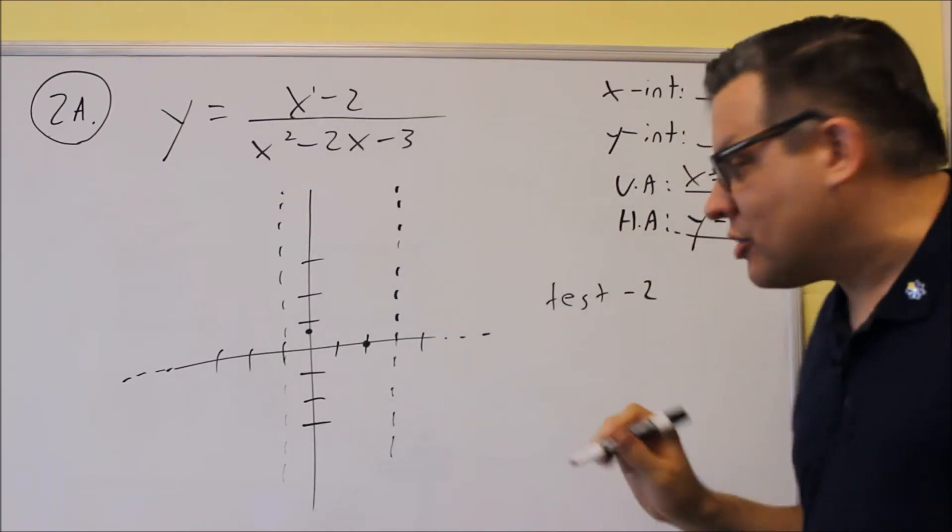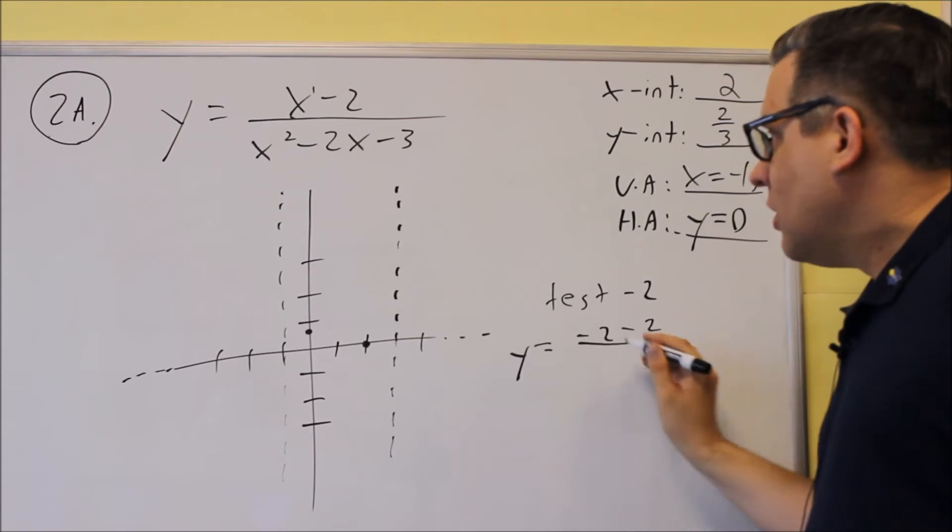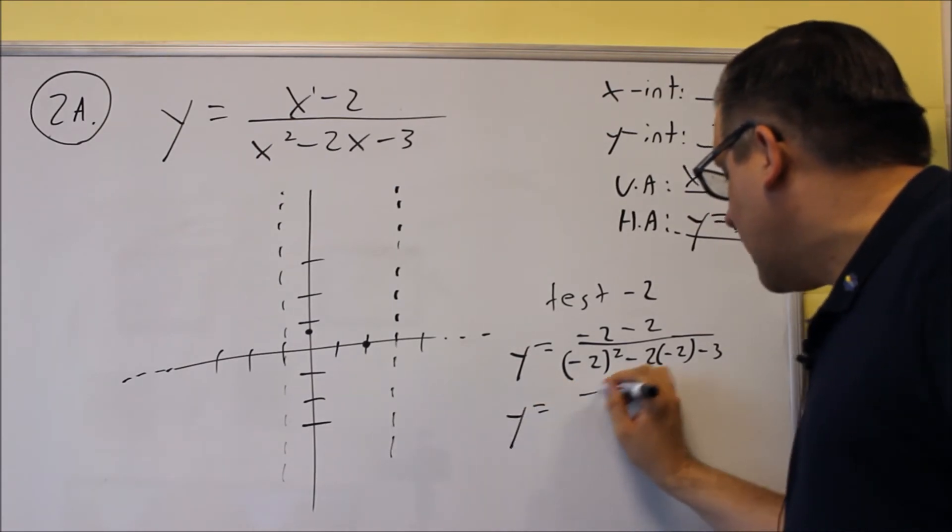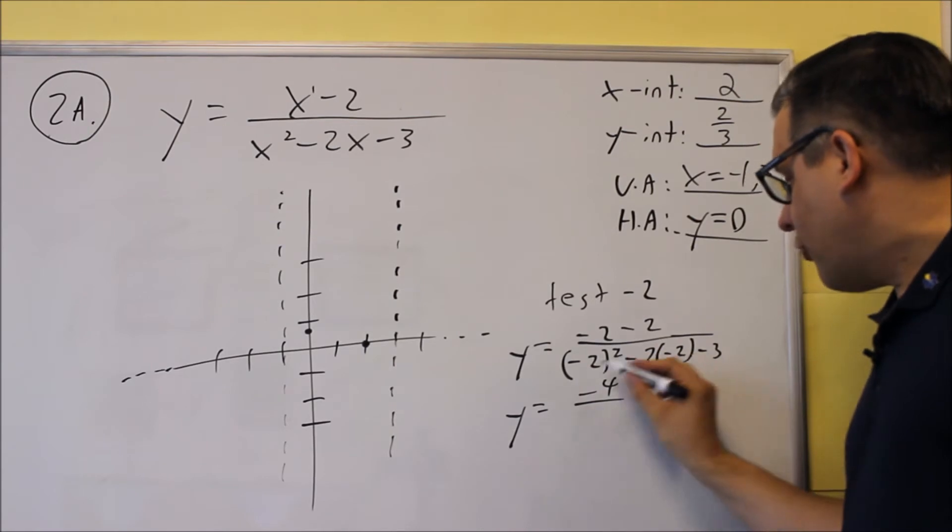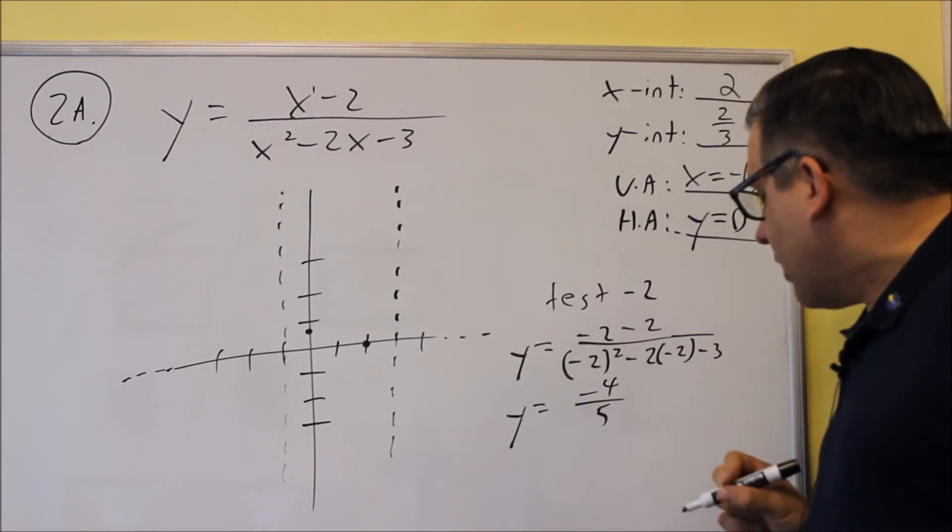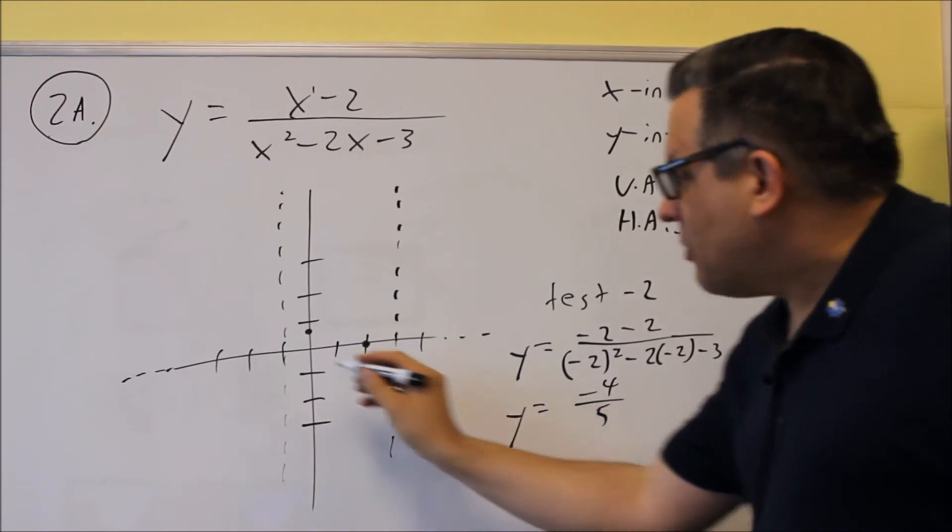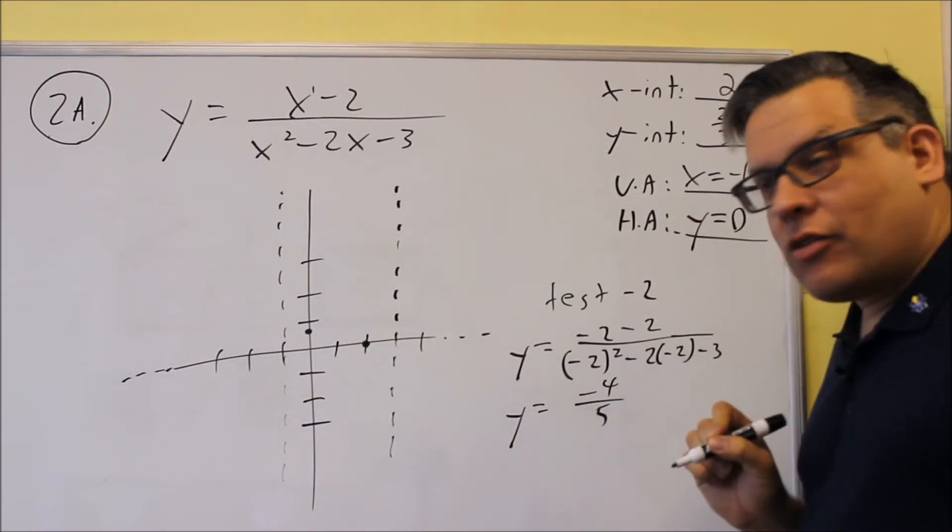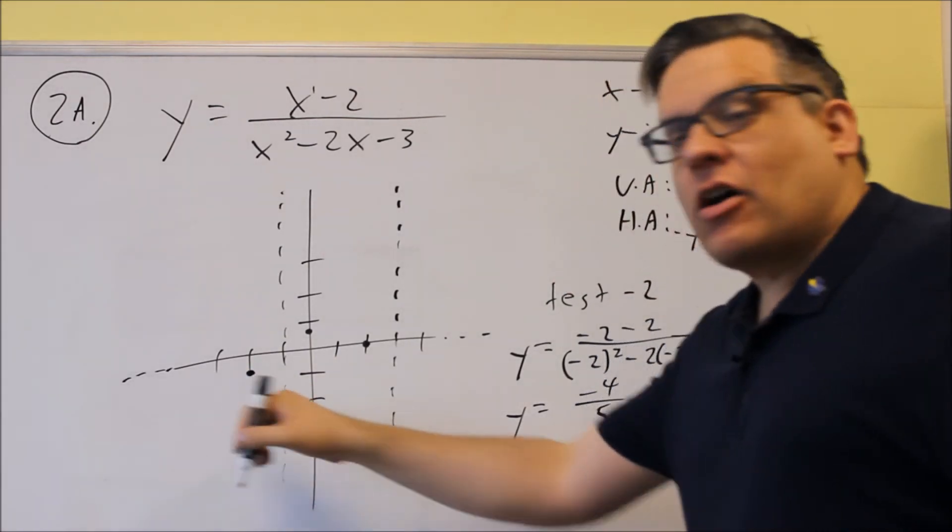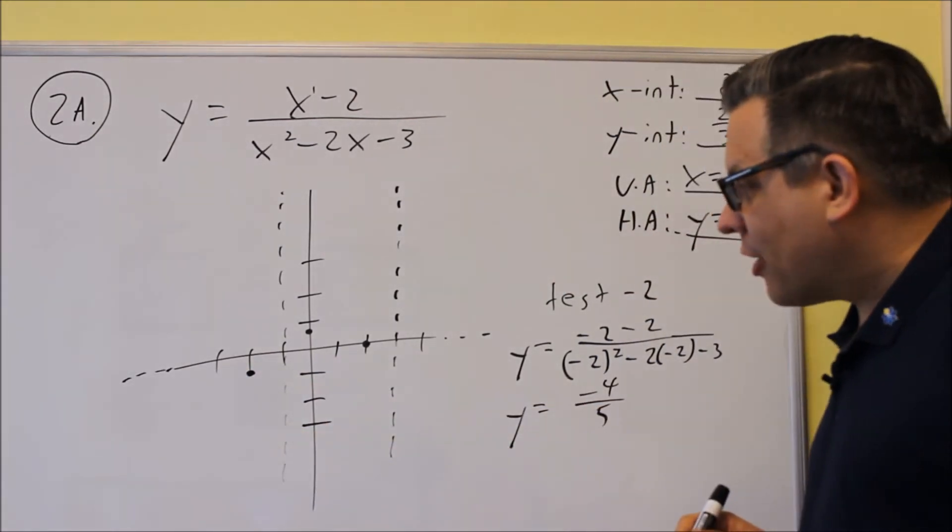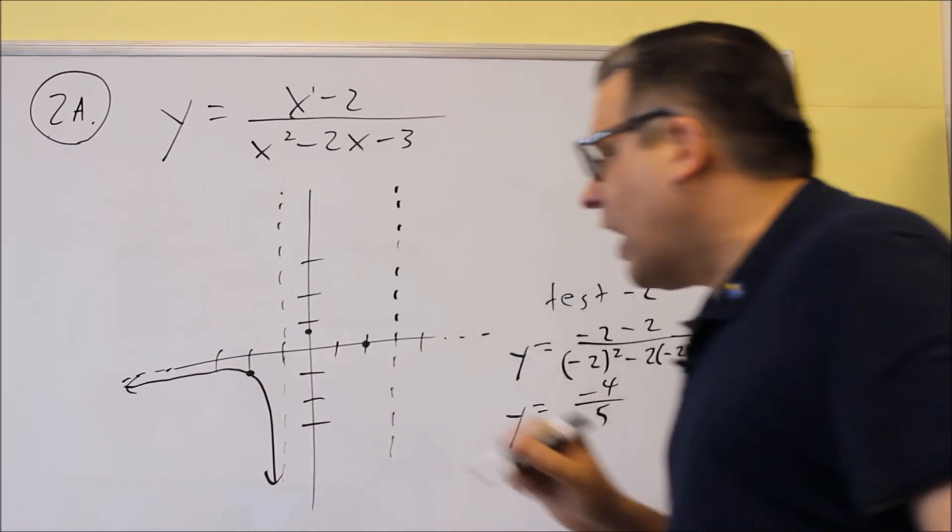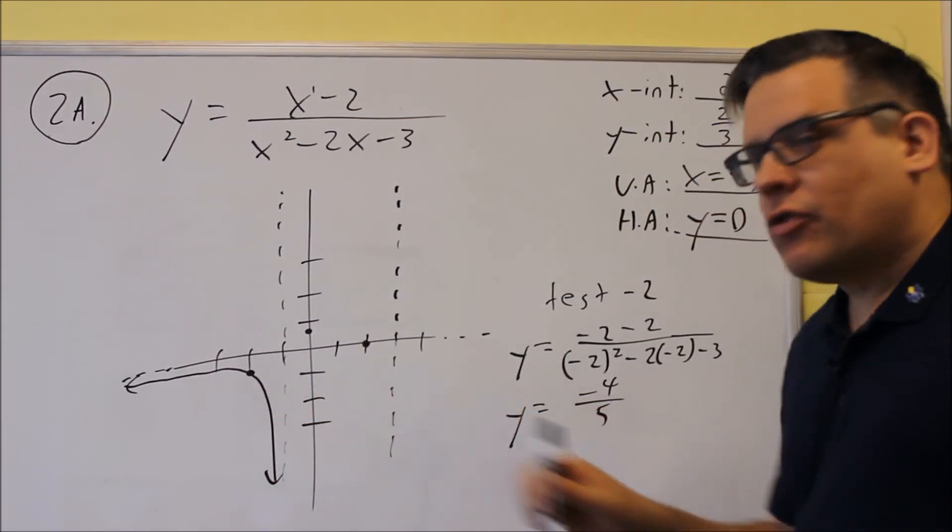All I'm concerned about is where it actually is, if it's above or below. I'm actually going to plot that point when I'm done, so I do want to figure out what the actual y value is. If I do that, I get negative two minus two over negative two squared minus two times negative two minus three. So I get negative four on top and the bottom I get four plus four, eight minus three is five. So I get negative four-fifths as a result. So that means it's going to be plotted here at negative two and negative four-fifths, about right there. That tells me that the graph is going to be down here in that lower left-hand quadrant. So the graph is going to follow this horizontal one, it'll hit that point and then it's going to fall and look something like that.